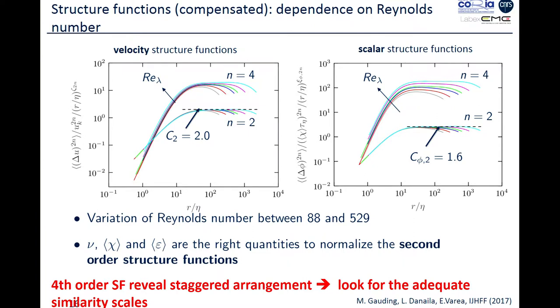For the scalar, for the second-order moment, they perfectly normalize, these are the compensated second-order structure functions for the scalar, then they are perfectly normalized with respect to Kolmogorov-Obukhov-Corrsin variables. But if we normalize the fourth-order structure functions here that we see that are staggered arrangement, here this is the result for the velocity field and here for the scalar, so both the velocity and the scalar, the higher-order moments do not normalize with respect to the classical Kolmogorov-Obukhov-Corrsin variables.